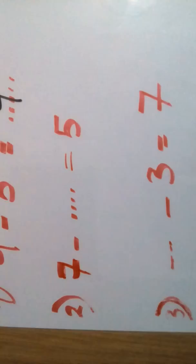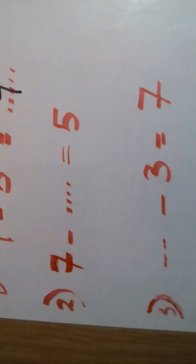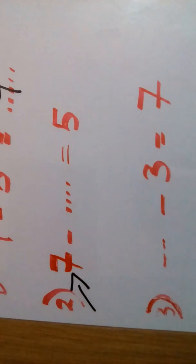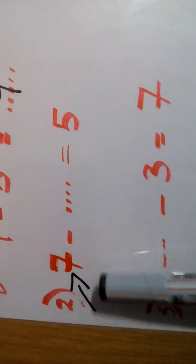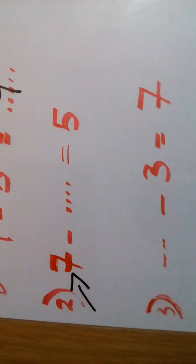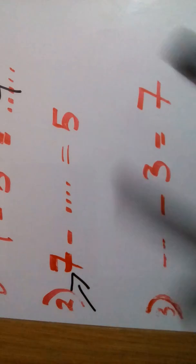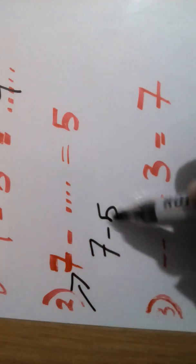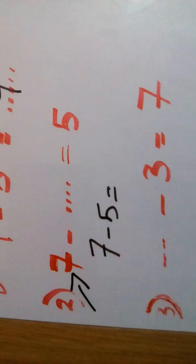Now I have a missing number: 7 minus what equals 5? If you have a missing number, search for the biggest number. In subtraction, the biggest number comes first — 7 is the biggest number. Take the smallest number from the biggest: 7 minus 5.